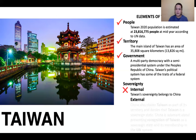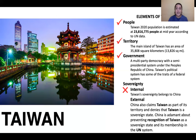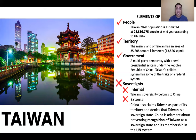For external sovereignty: China claims Taiwan as part of its own territory and denies that Taiwan is a sovereign state. China is adamant about preventing recognition of Taiwan as a sovereign state and blocking its membership in the United Nations system. Therefore, the family of nations does not recognize Taiwan as a sovereign state, meaning no external sovereignty exists. Since one essential element — sovereignty — is missing, Taiwan is not considered a state.